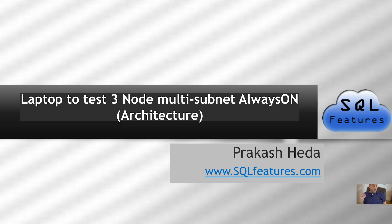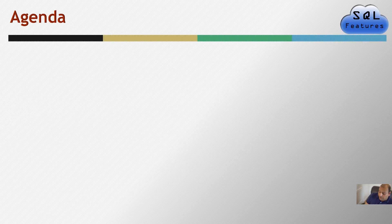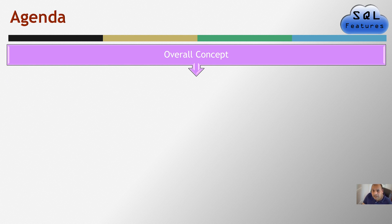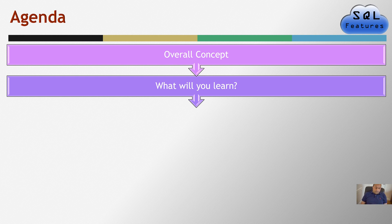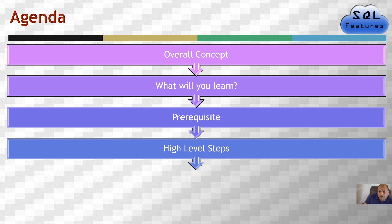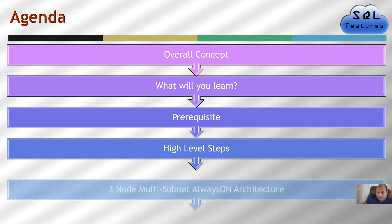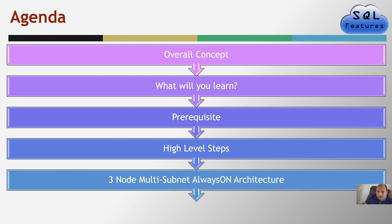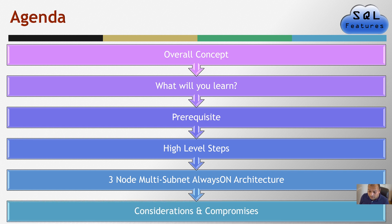Hopefully this tutorial will help you, so let's get going. Starting with the agenda: first we'll talk about the overall concept, what this idea came from, the background about it, and we'll cover what aspects of Always On you'll be learning. After that I will cover the prerequisites you need to set up something like this on your own laptop or desktop. We'll cover high-level steps — this video series will have about 14 to 15 videos — and we'll talk about the overall architecture we are building and the consideration compromises we'll have to make.